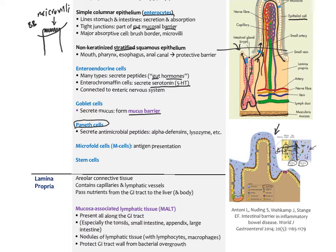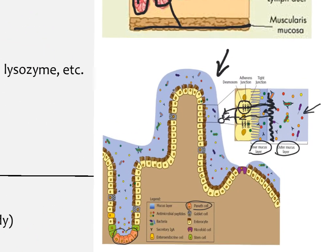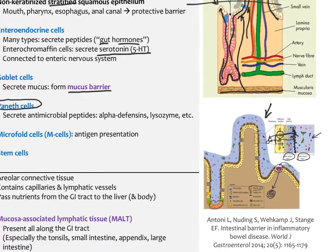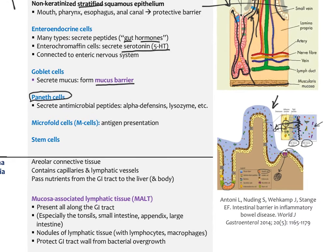Microfold cells, or M cells, are special cells in the mucosa that act as antigen-presenting cells. They take antigens from bacteria, bring them in, and present them to macrophages in lymph nodes or in Peyer's patches. Stem cells at the base of the crypts constantly regenerate many of these mucosal cells.